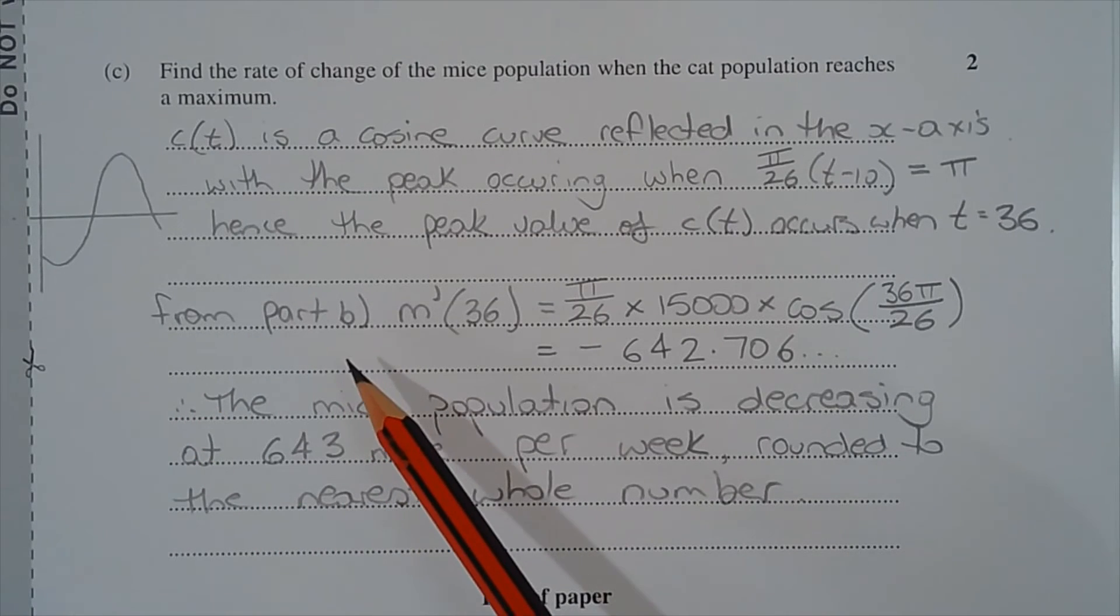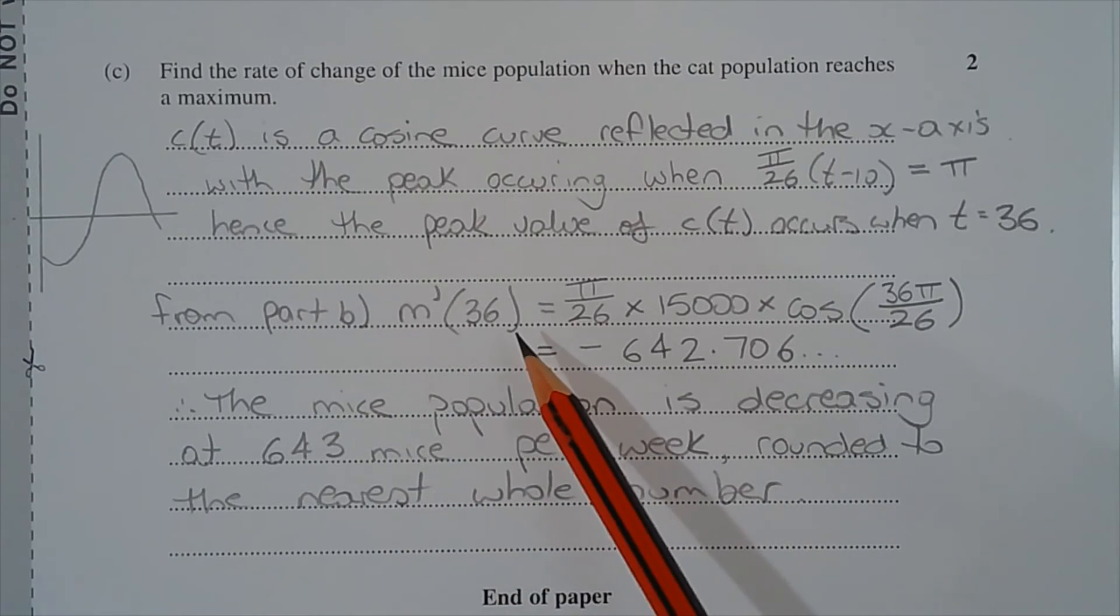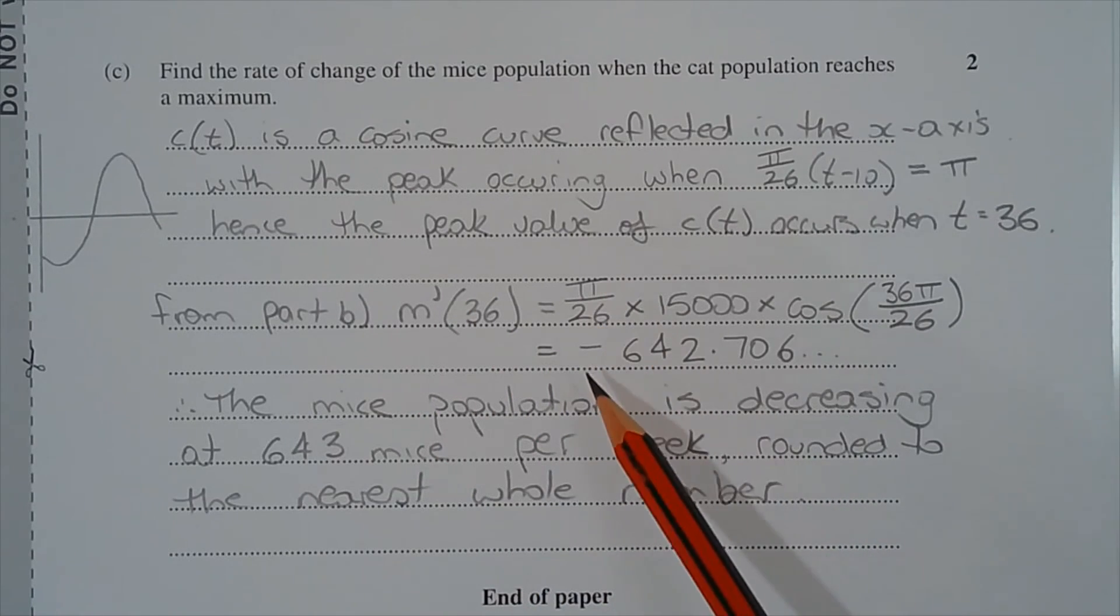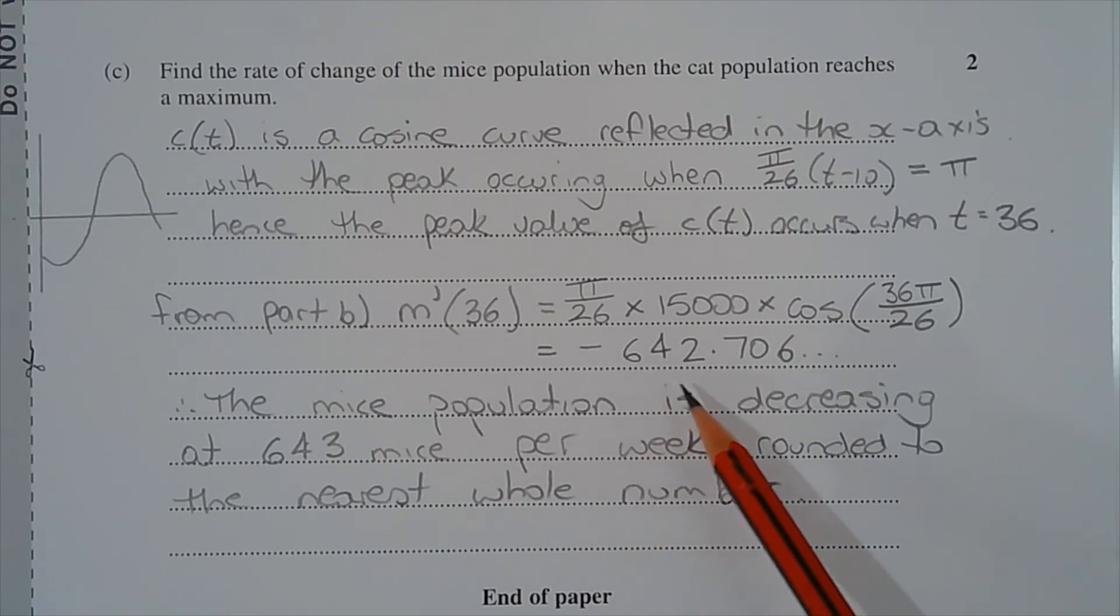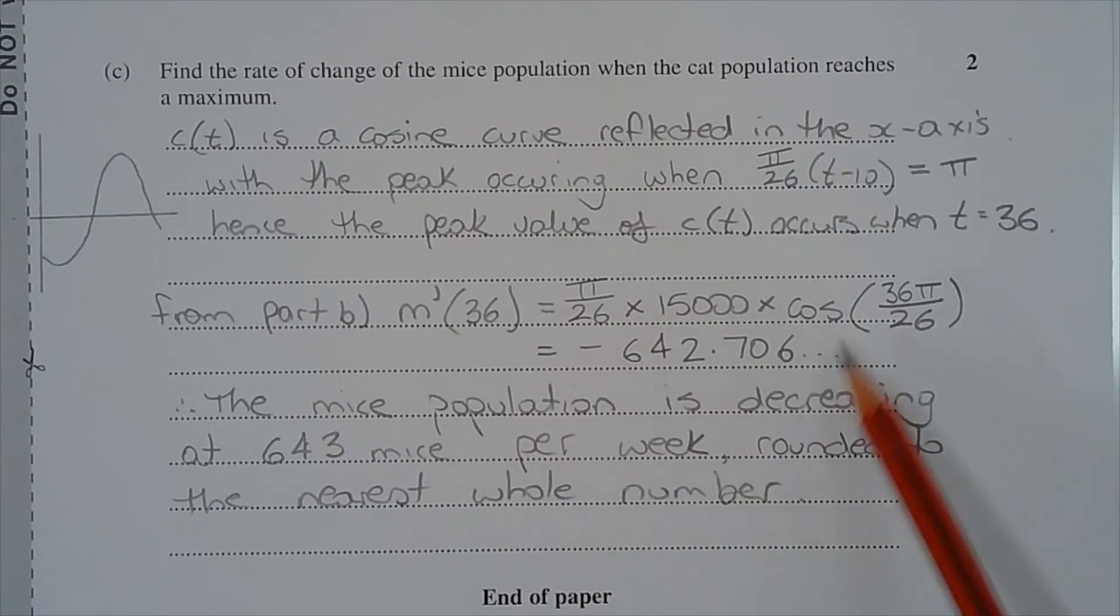Now from part B, to find the rate of change of the mice population, we've already found m'(t) and we're just going to substitute 36 for t in the equation m'(t). And that equals (pi/26) multiplied by 15,000 multiplied by cos(36π/26). Making sure that your calculator is in radians, that equals -642.706 and so on. Now this is a negative result which means that the mice population is decreasing. So therefore the mice population is decreasing at 643 mice per week rounded to the nearest whole number.